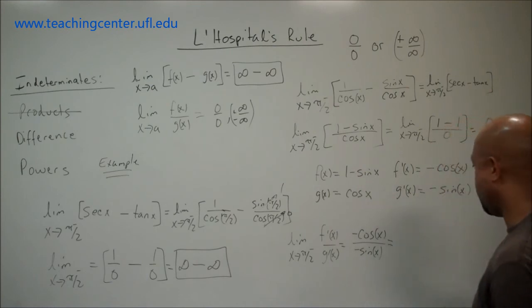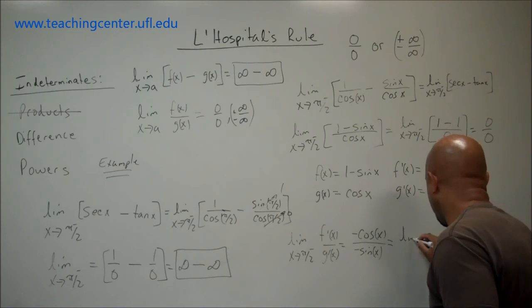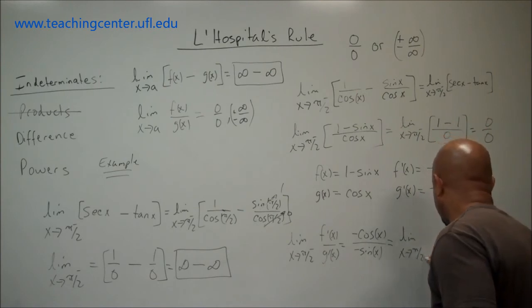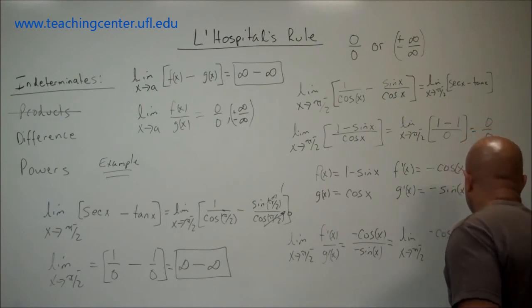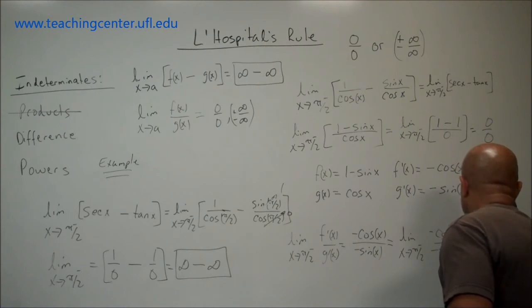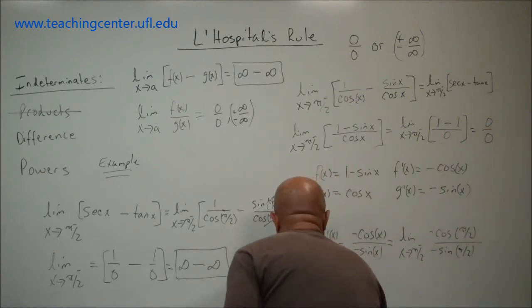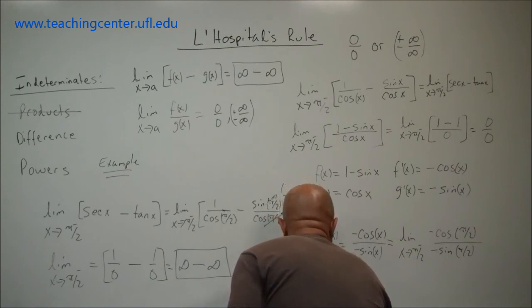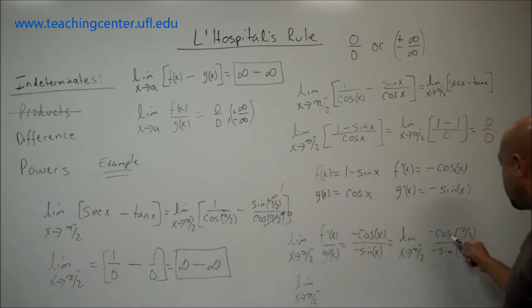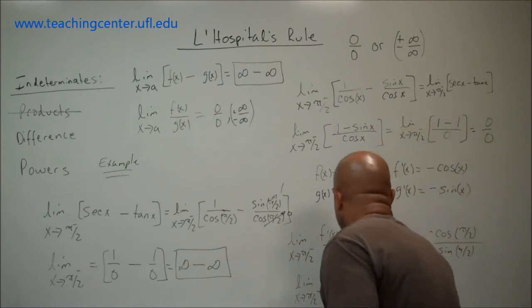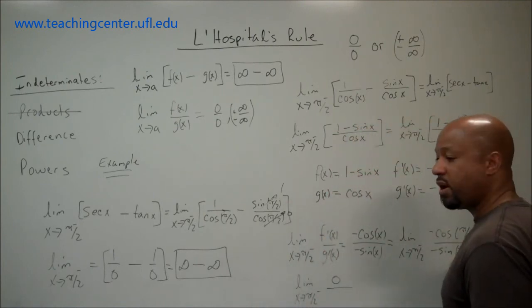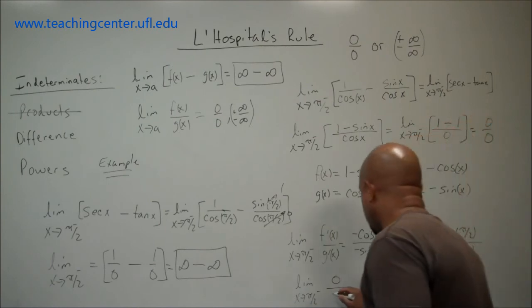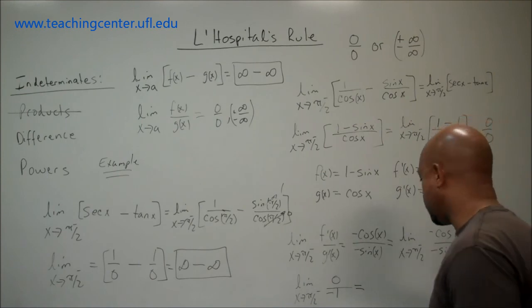We can now evaluate this limit as x approaches π/2 from the left: minus cosine(π/2) divided by minus sine(π/2). The cosine of π/2 is 0, so we get 0 in the numerator. The sine of π/2 is 1, giving a denominator of negative 1. Since 0 over any number is 0, the limit equals 0.